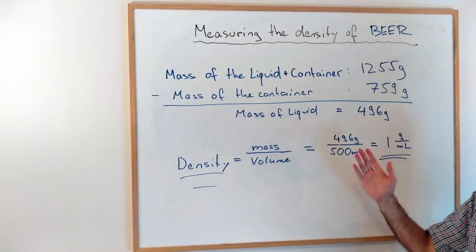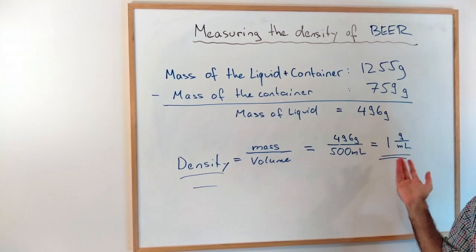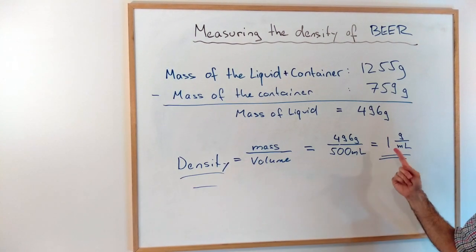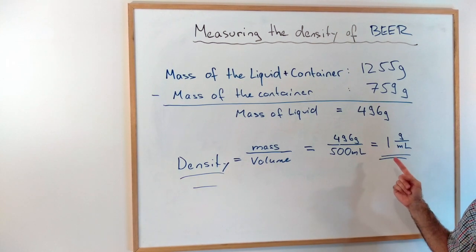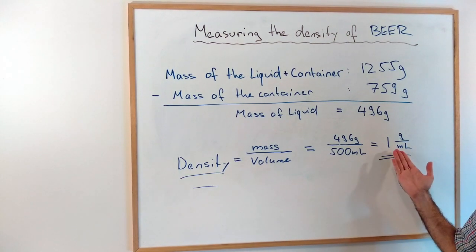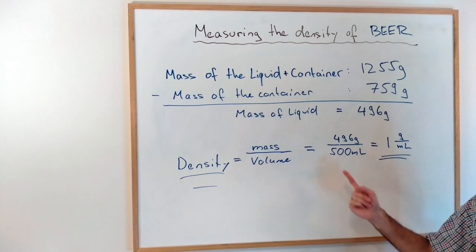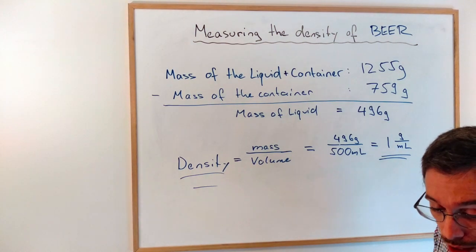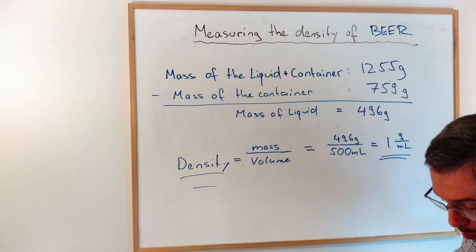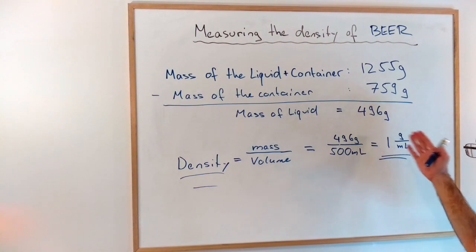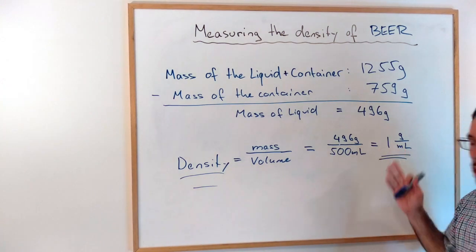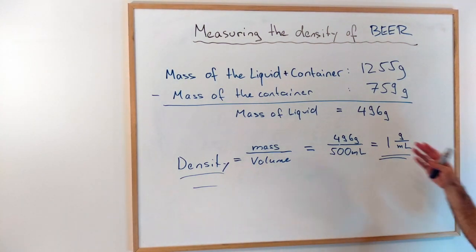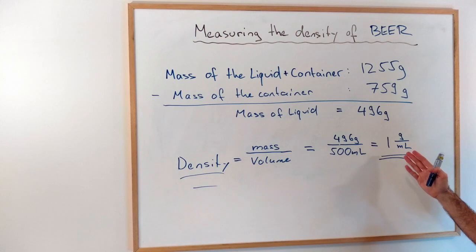Now if I go online and Google this, apparently it depends on the type of beer, but all of them are within 1 gram per milliliter. Of course, my measurement here is not very precise because I only have one significant figure on my measuring device, so I'm a bit limited. But I get the correct order of magnitude—if I look it up, it is around 1 gram per milliliter.